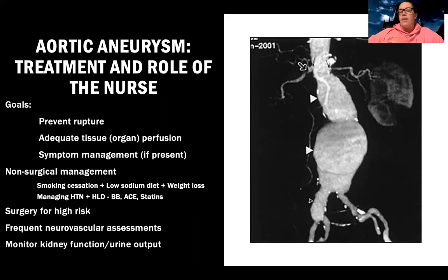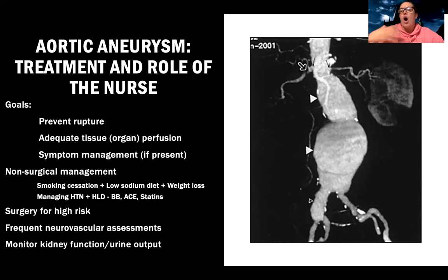They might receive beta blockers and ACE inhibitors, because we don't want the heart beating too fast. Beta blockers decrease heart rate as well as blood pressure, so there's not too much stress on this artery that is essentially a ticking time bomb. I want to decrease all their risk factors if possible.